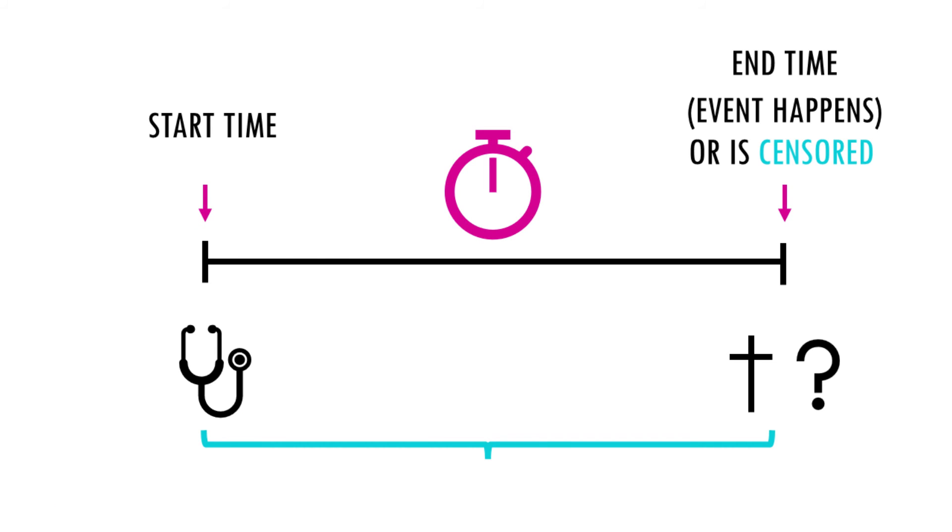So censored data is simply data you don't know if or when the event happened. In a clinical trial context, censoring means the total survival time for that patient cannot be accurately determined. In many cases, we study actual survival times. So the event of interest is death.